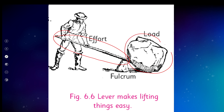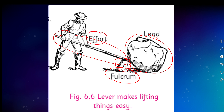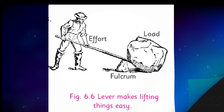Here you can see a lever — just a simple piece of rod being used to lift a load. The point where the rod is resting is called the fulcrum. So the three parts of this lever are: where effort is applied, the load which is being lifted, and where it rests — that is the fulcrum. A lever makes lifting things easier.